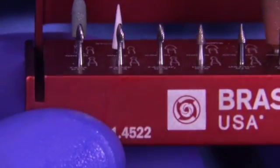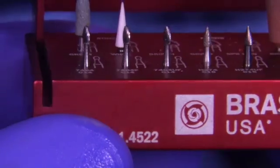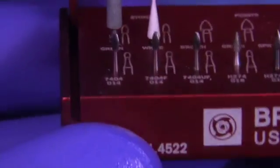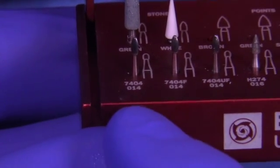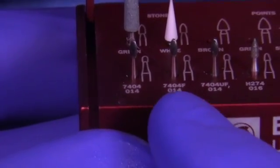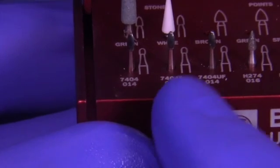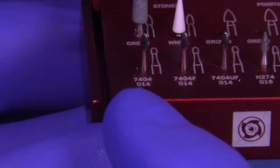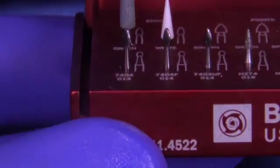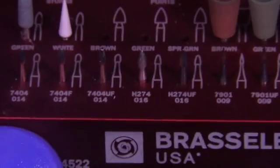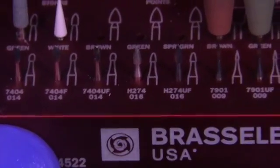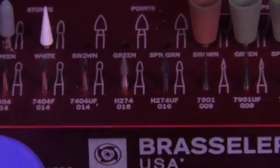Let's spend a couple seconds talking about this burr block. I love these 7404s—they're really helpful for adjusting occlusion. After you've done all this beautiful finishing and polishing, you want something that doesn't destroy this beautiful surface and you want to bring it back to the luster you had before.